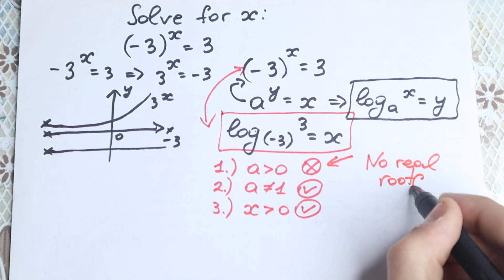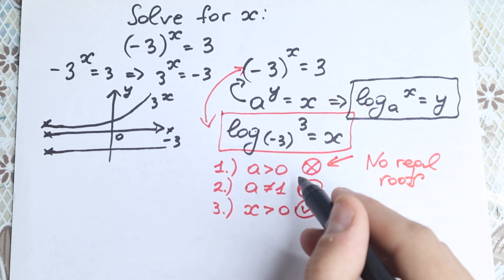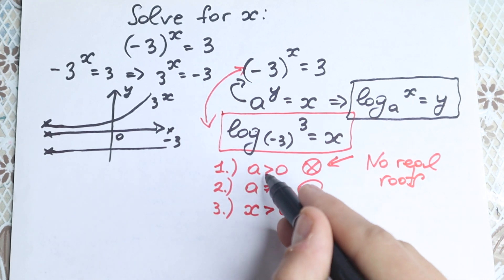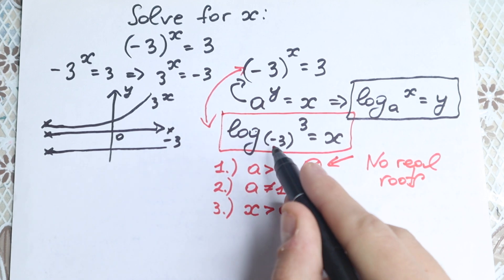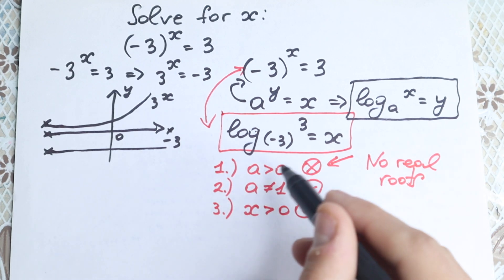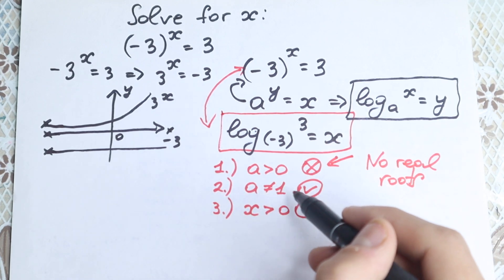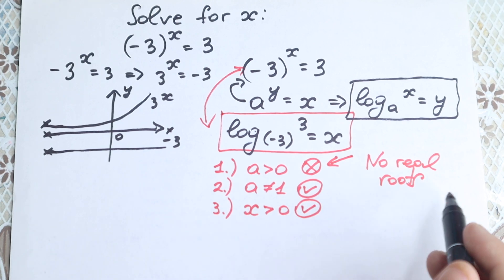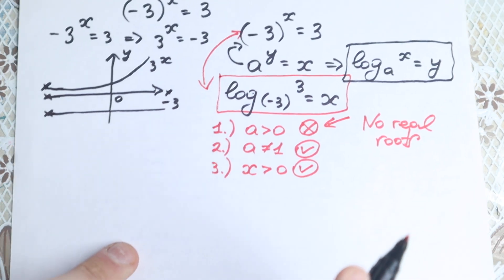If the base were positive, we could find real roots quickly. But here the base is minus 3, which is not positive — so no real roots. This explains why we don't have real roots. But what about complex roots? It is really interesting to find the complex roots here, so let's find them.